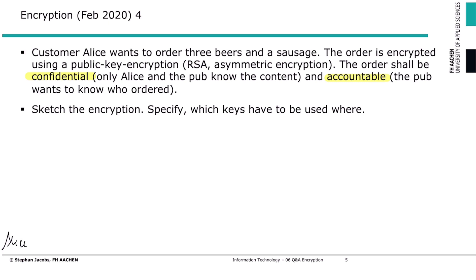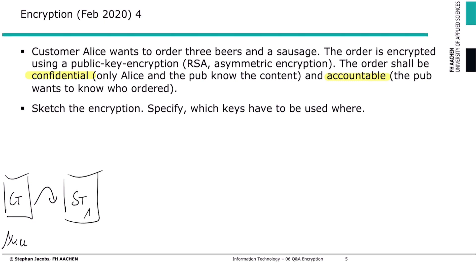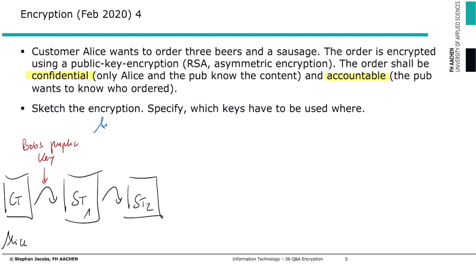Alice is sending the message. We have our clear text and she does a first encryption, preparing secret text one. To achieve confidentiality, she uses Bob's public key. Then she uses secret text one as an input and does another encryption to create secret text two, this time using Alice's own private key.